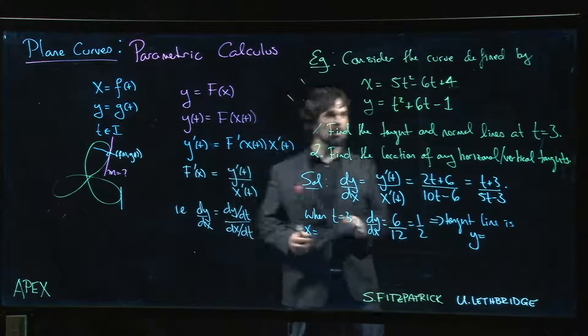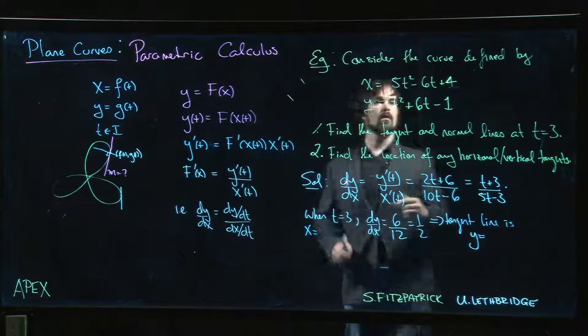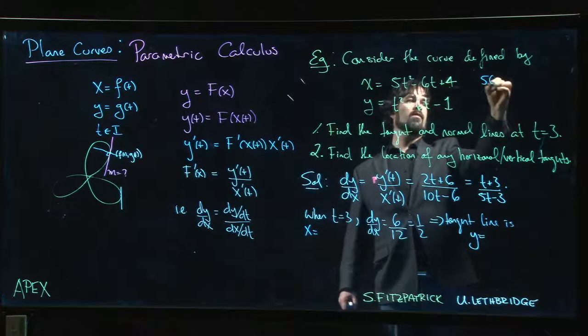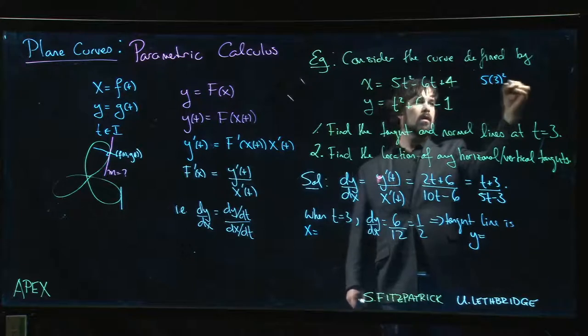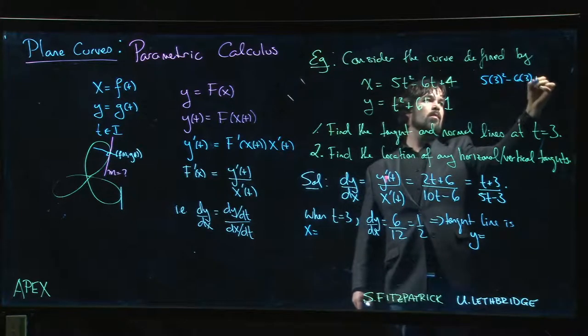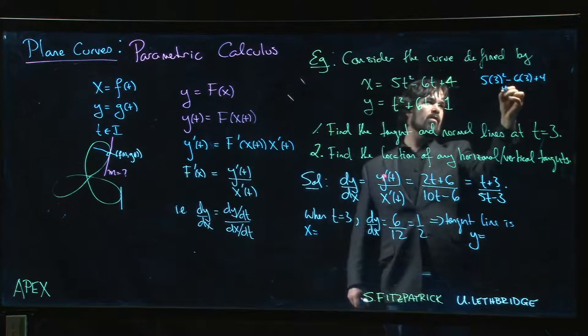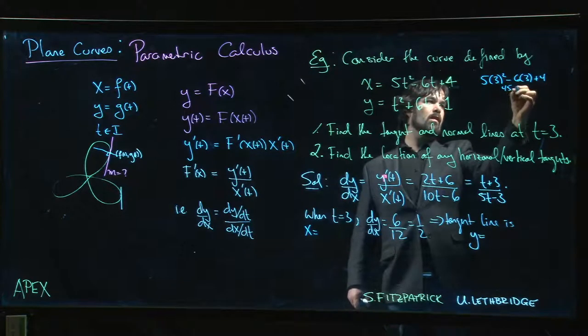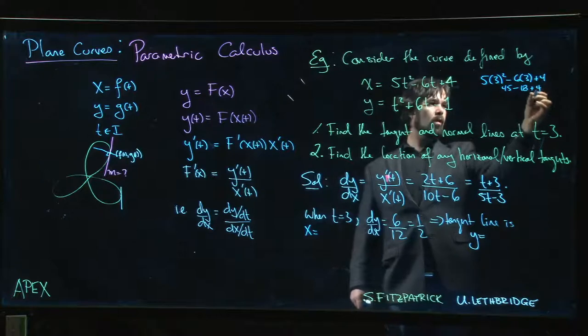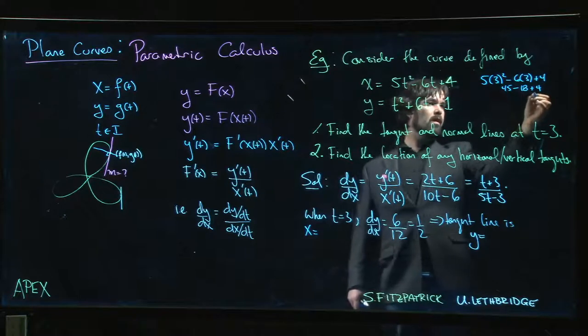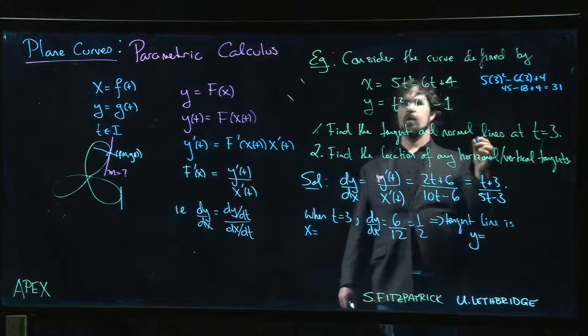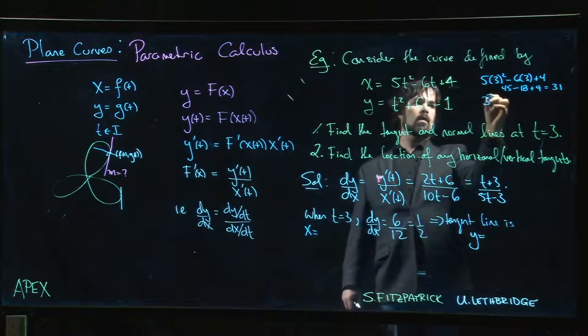So if I do 5 times 3 squared minus 6 times 3 plus 4, that is 45 minus 18 plus 4, so 49 minus 18 gets me to 31.